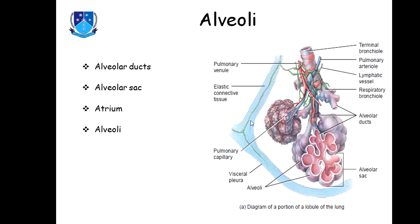Each lobule is provided by a terminal bronchiole and has a separate intact layer dividing it from others. The terminal bronchiole divides into respiratory bronchioles, which divide into alveolar ducts. These alveolar ducts lead to a sac-like structure called the alveolar sac, which contains a large number of alveoli — round-shaped structures.